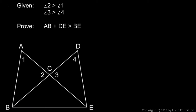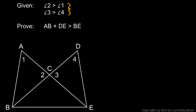Now it certainly looks in the picture like AB plus DE together would be greater than BE. But we want to establish this logically based on the given information. We don't want to simply state that it's larger because it looks larger. We want to reason to this conclusion starting with the given information.